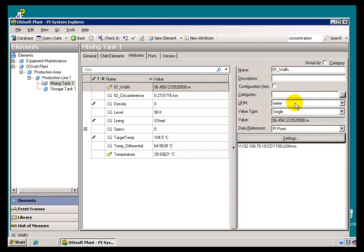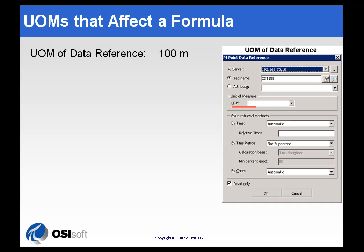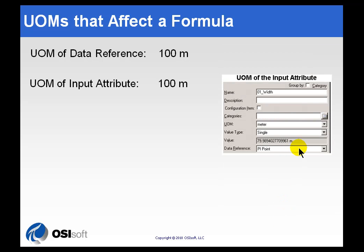When we configure this Attribute, we also give that Attribute a Unit of Measure, and we're also setting that up as meters here. Now, if you did want to affect a conversion, you could actually change that to something else — that would be one level of conversion. You're retrieving it as meters, but then you're treating the Attribute as a different Unit of Measure. So the first Unit of Measure is in the Data Reference itself. The second is in the Definition of the Input Attribute.